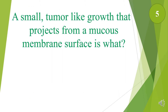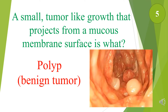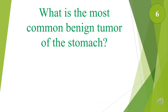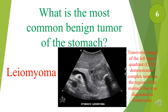A small tumor-like growth that projects from a mucous membrane surface is what? That is a polyp, which is a benign tumor. What is the most common benign tumor of the stomach? The most common benign tumor of the stomach is the leiomyoma. This is a transverse image of the upper left quadrant demonstrating a complex tumor in the region of the stomach that was diagnosed as leiomyoma.